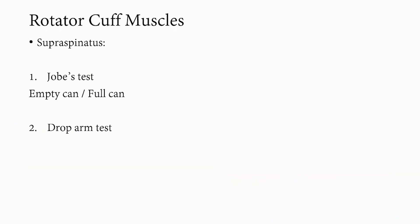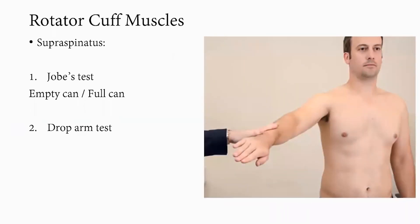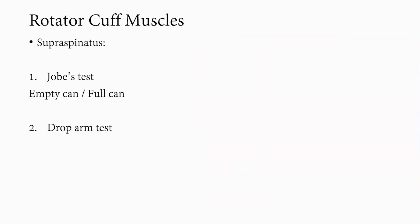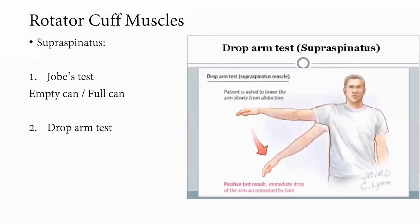For rotator cuff muscle testing, each muscle has a strength test and a lag sign. Starting with the supraspinatus: the Jobe test or empty can test is performed with the shoulder abducted to 90 degrees and thumb pointing to the floor — the position where the supraspinatus muscle-tendon unit is parallel to the floor. The lag sign is the drop arm sign, where the examiner positions the shoulder in abduction and asks the patient to slowly adduct; failure with dropping of the arm is a positive lag sign. The full can test, with thumb pointing upward, can also isolate the supraspinatus and is less painful in impingement.